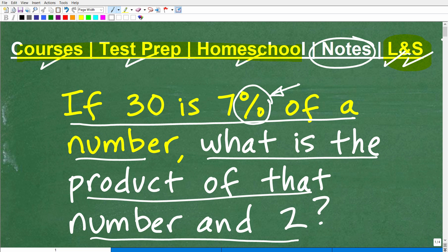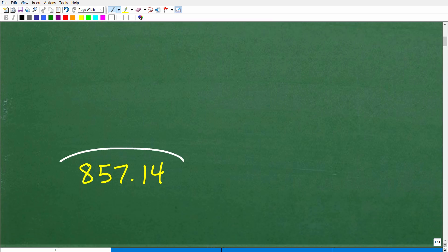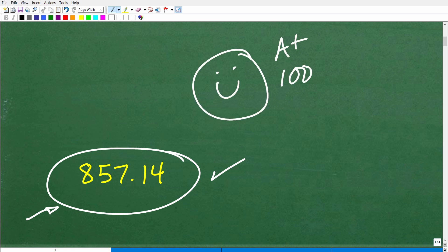Okay, so let's go ahead and take a look at the answer to this problem. If 30 is 7% of a number, what is the product of that number and 2? The answer is 857, and this is an approximation. So if you have an answer that's pretty close to this, well, I'm going to consider that as a correct solution. But basically, 857.14 is a pretty good approximation of the answer hopefully you got. Now, if you got an answer that's pretty close to this, let's go ahead and celebrate that with a nice little happy face, an A plus, a 100%, and a few stars so you can brag to your friends and family that you solved a pretty interesting math word problem today.